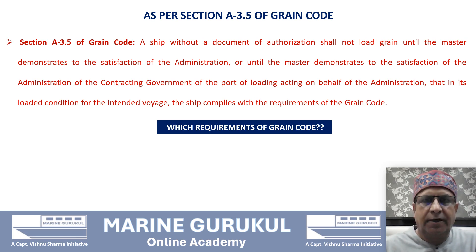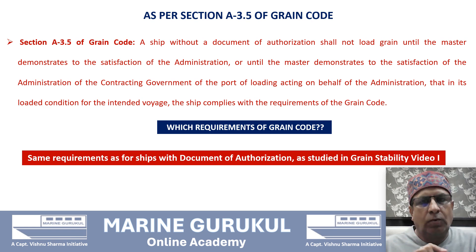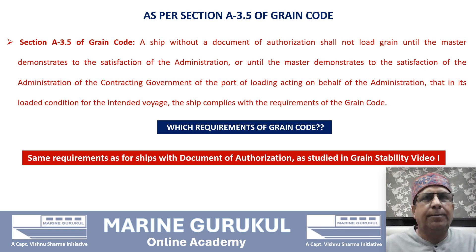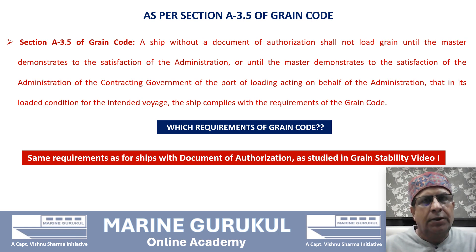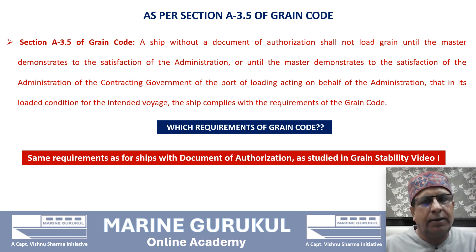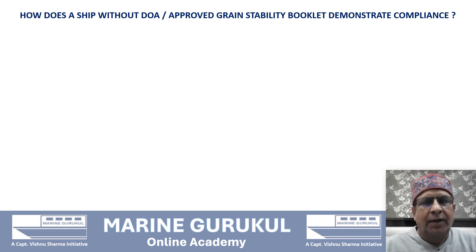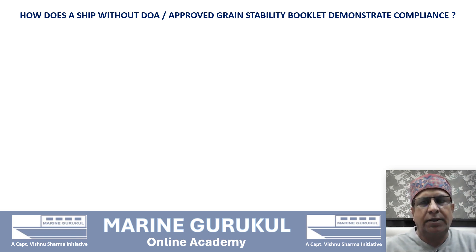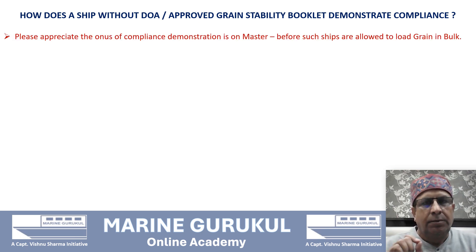The requirements being referred to are the ones covered in our video 1. That means if a vessel without a Document of Authorization can demonstrate to the competent authority that in its intended condition of loading or intended voyage the vessel shall comply with the requirements of the Grain Code, she may be allowed to load grain in bulk to its full capacity. However, a big question arises here: how does a ship without a Document of Authorization or without an approved grain stability booklet demonstrate her compliance? The onus of compliance demonstration is on the master.